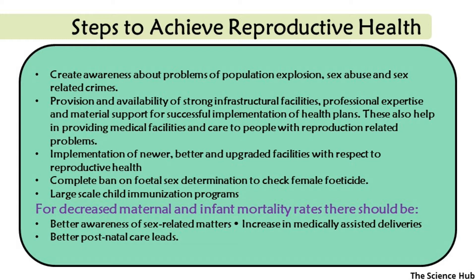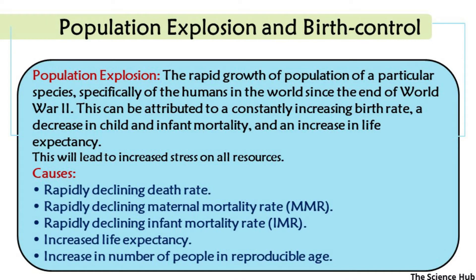A complete ban on fetal sex determination to check female feticide and large-scale child immunization programs help decrease maternal and infant mortality rates. There should be better awareness of sex-related matters, an increase in medically assisted deliveries, and better postnatal care.